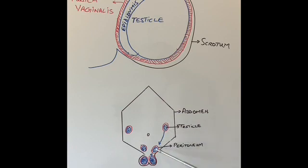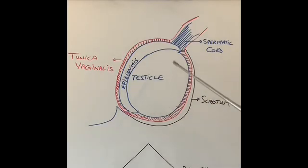Now, when the testicle comes down, it pulls this lining, which is the peritoneum, brings it down into the scrotum with it. Now, to explain this a bit easier, I have drawn this bigger diagram of the testicle.